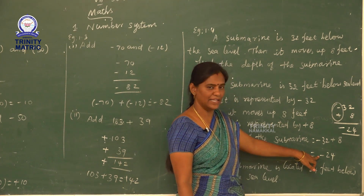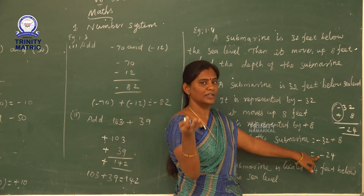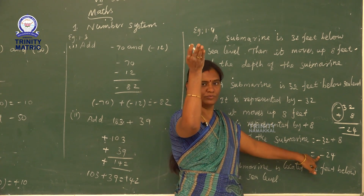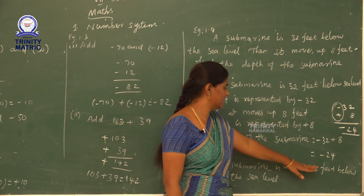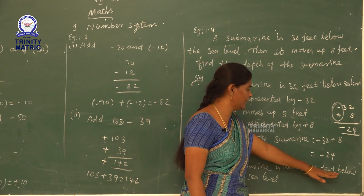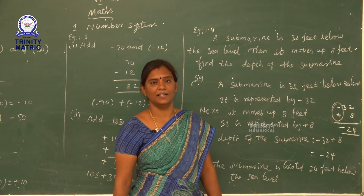If the answer had been plus 24, it would mean 24 feet above sea level. But here the answer is minus 24, meaning 24 feet below sea level.